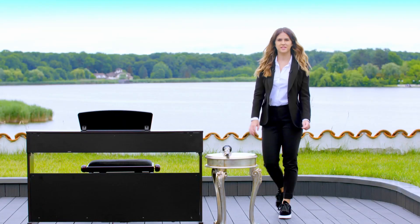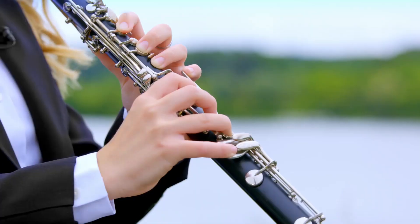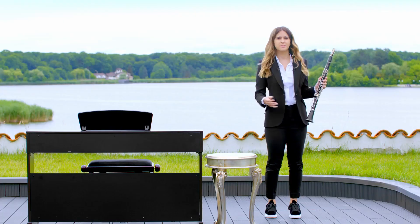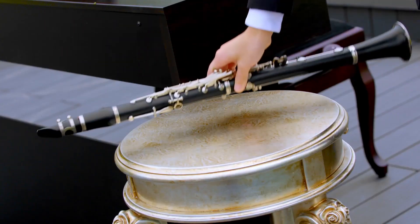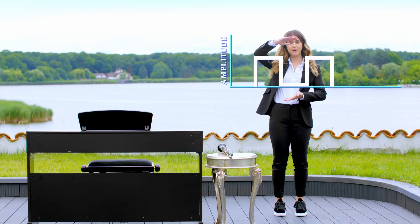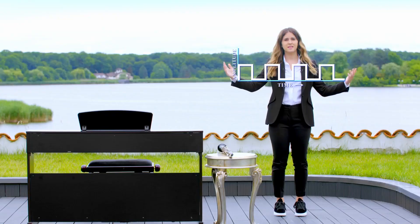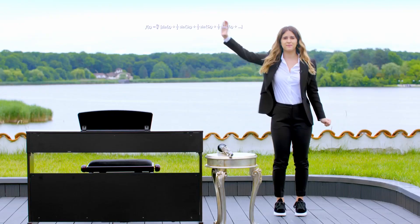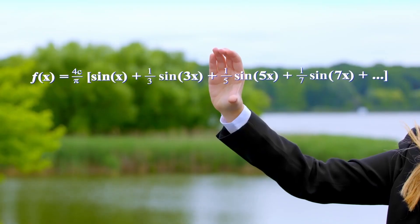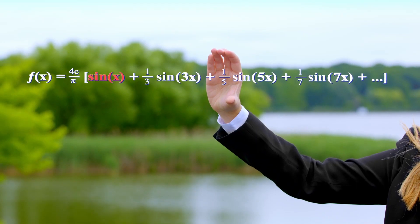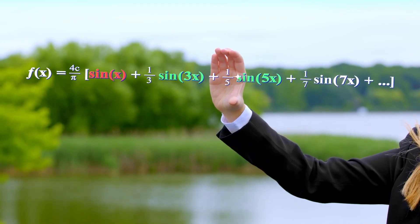Let's say we wanted to graph the sound produced when playing the E note on this beautiful clarinet. Clarinets typically produce a wave called a square wave, and using this information we can plug in values into these formulas and create a function for this wave. The y-axis represents the amplitude, or the volume, and the x-axis represents time. By doing this, we would get this function, which is created by simply adding sine overtones to the fundamental sine wave.